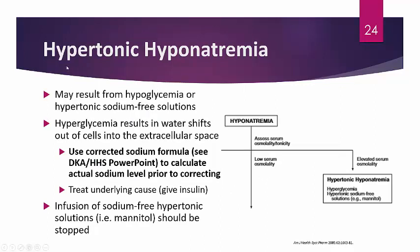Next, hypertonic hyponatremia — more common than isotonic but less common than hypotonic hyponatremia. This may result from hyperglycemia (note: the PowerPoint had a typo that will be corrected) or hypertonic sodium-free solutions. Hyperglycemia causes water shifts out of cells into the extracellular space, creating a dilutional effect. To assess actual sodium level, use the corrected sodium formula: 1.6 × (glucose − 100) + measured serum sodium.